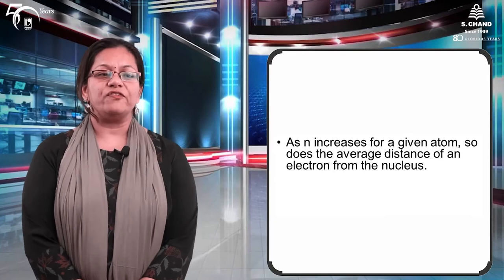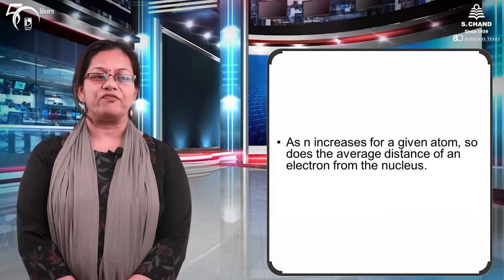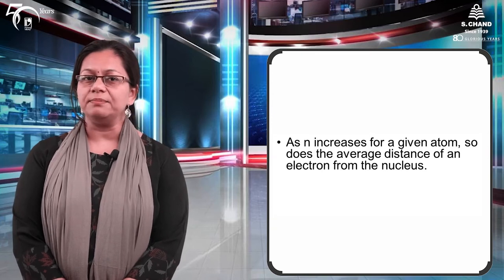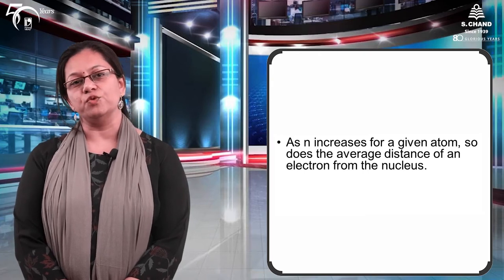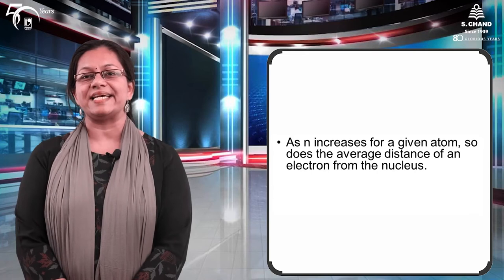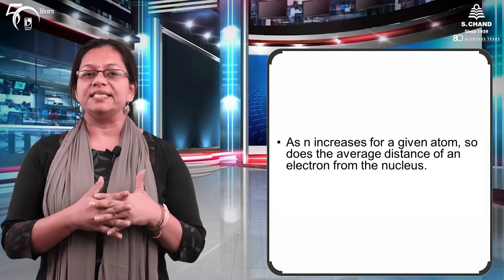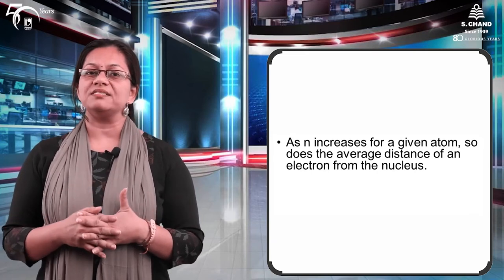Welcome back. When the value of N increases, the average distance of the electron from the nucleus also increases. Agar N ki value 1 hai toh orbit nucleus ke bilkul paas hoga. N ki value 2 hogi toh orbit thoda dur ho jaega. Jaise N ki value badhti rahegi, the distance of the electron from the nucleus will keep on increasing.